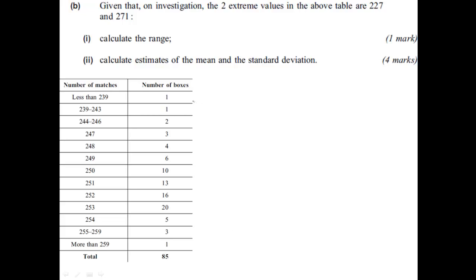We've now been given values for these two extreme values here. So instead of less than 239, we can now put the value 227 in there. And then at the bottom here, instead of more than 259, we can put the value 271. It then says calculate the range. Well, the range is just 271 minus 227, which equals 44. And that's the range.